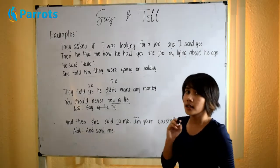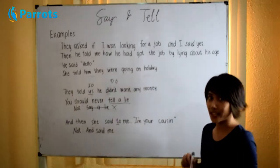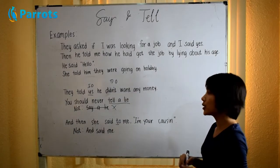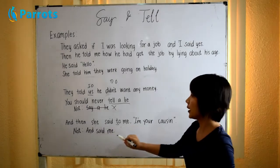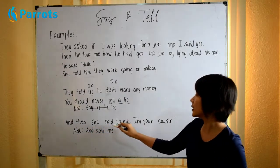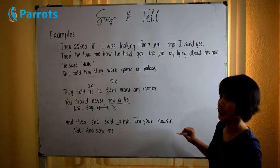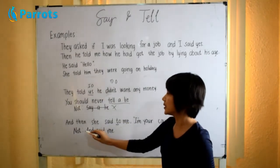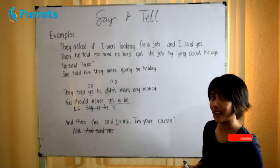Say does not take an indirect object in a sentence. Instead, we use to. For example, and then she said to me, I'm your cousin. We use said to me, not said me — that would be wrong.